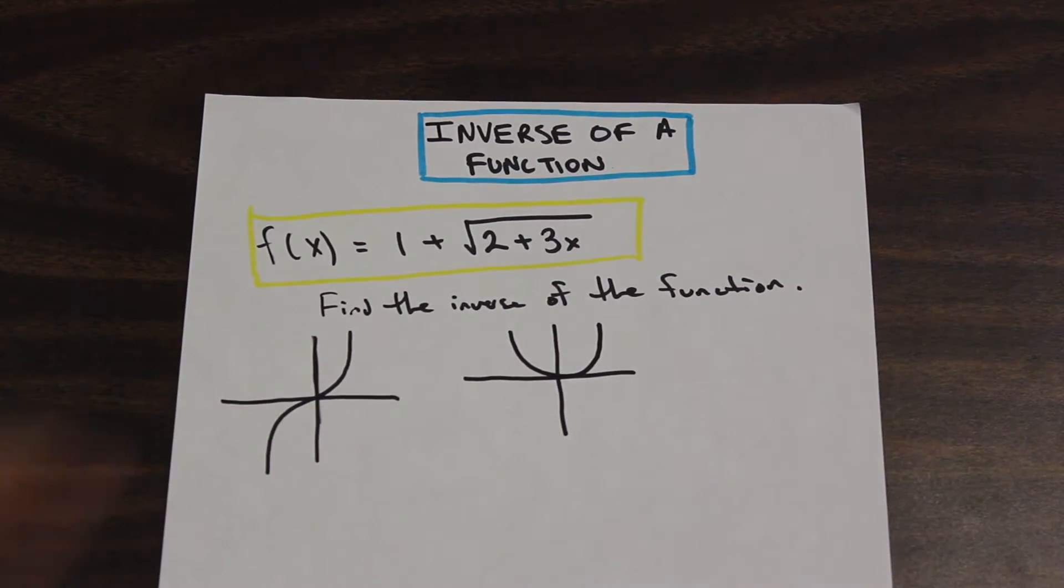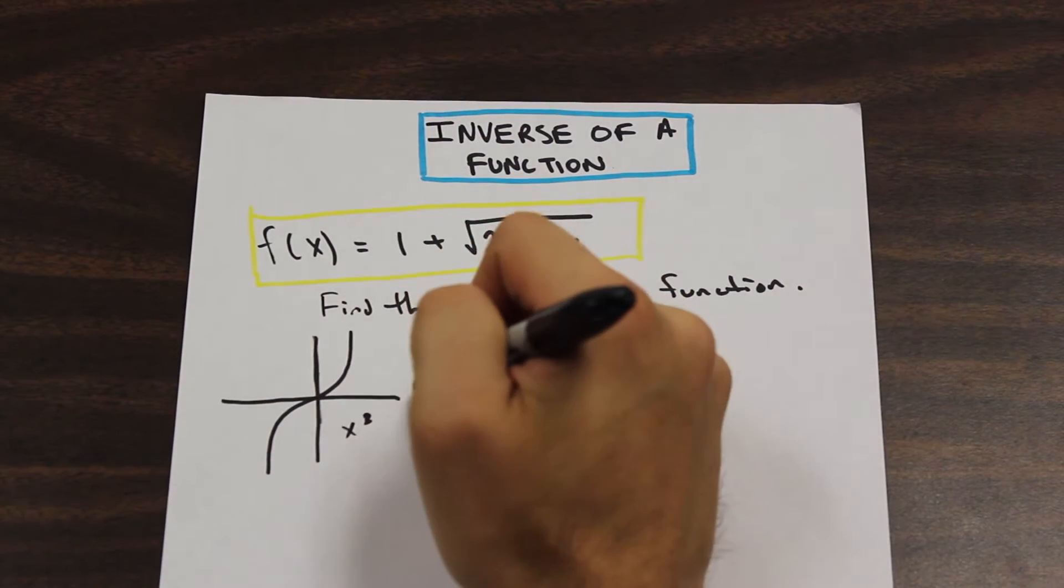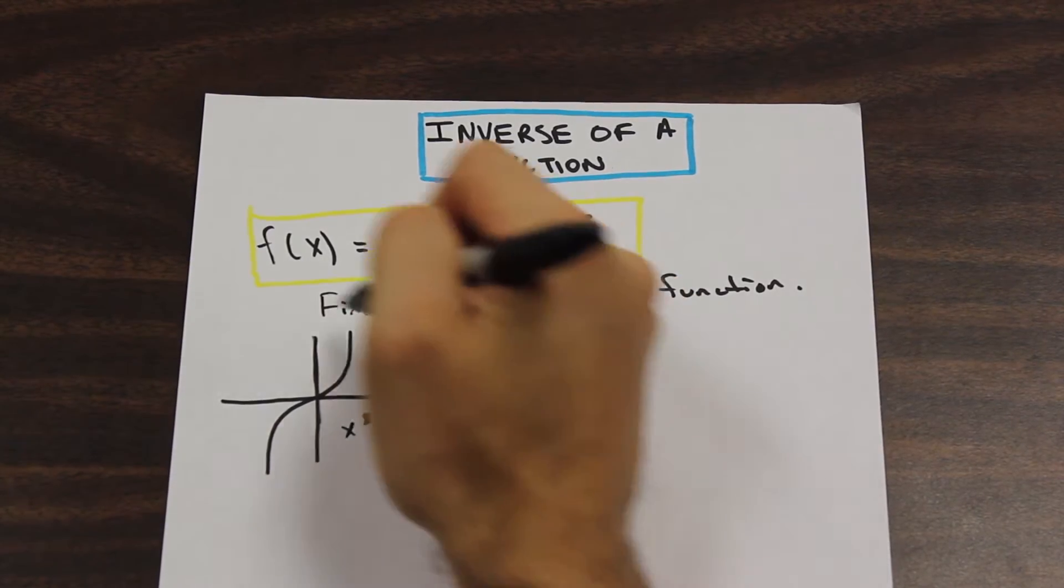So this here is x cubed, y equals x cubed. And if this is x and this is y, all right?